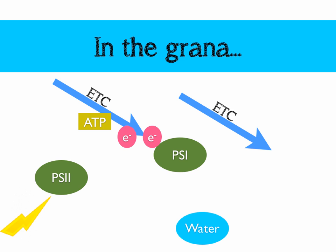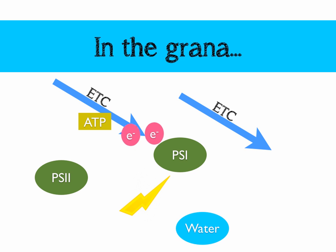Once this has happened, the electrons move on, and they go to replace two electrons that are now being released from photosystem 1, which has now been struck by a photon of light. Those two electrons from photosystem 1 are now released — they've been excited — and they move upwards into another electron transport chain.